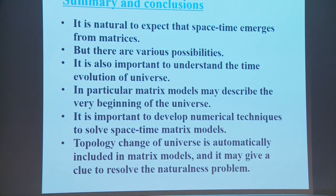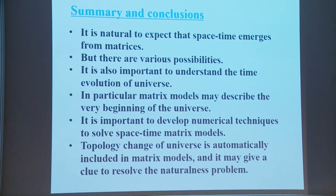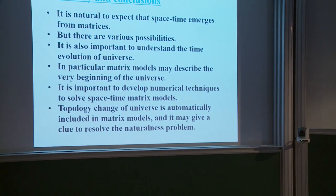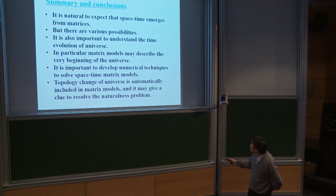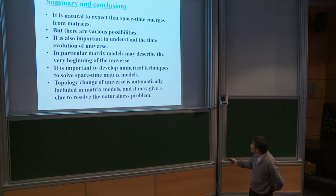In summary and conclusions: it is natural to expect that space-time emerges from matrices, but as we have seen there are various possibilities. It is important to understand the time evolution of the universe, and in particular matrix models may describe the very beginning of the universe. It is important to develop numerical techniques to solve space-time matrix models. Topology change is automatically included in matrix models and may give a clue to resolve the naturalness problem.